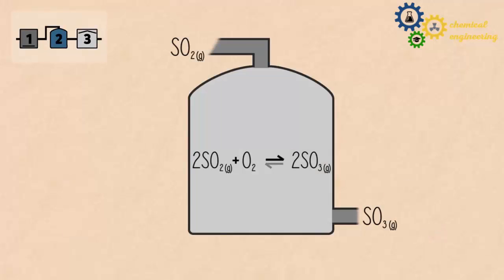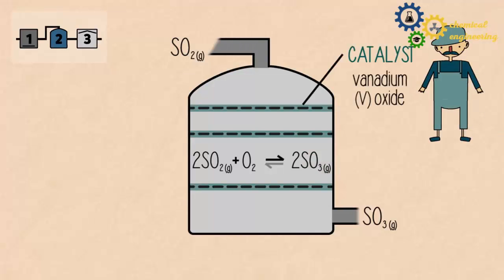This reaction can be sped up to form sulphur trioxide by adding a catalyst, vanadium oxide. This is an exothermic reaction, which means it gives out heat.